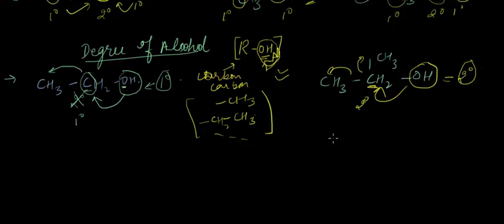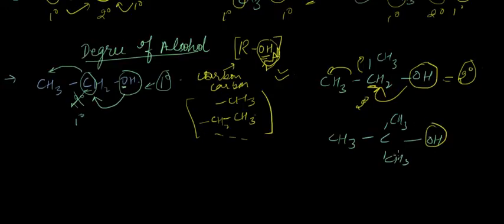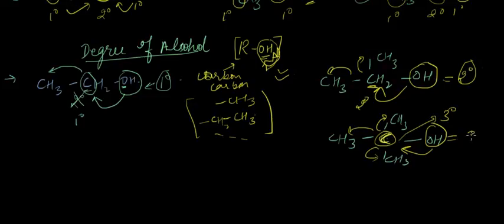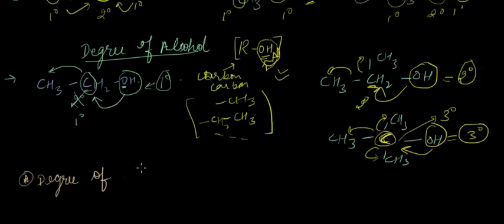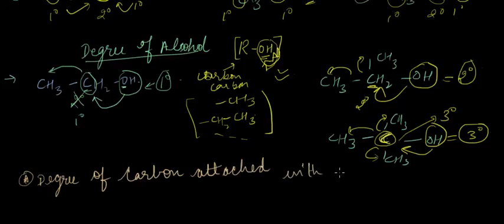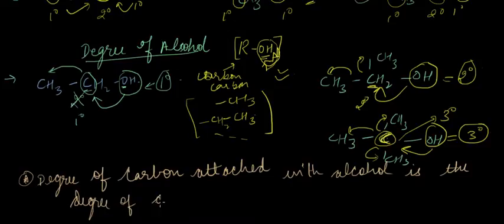In the third example, the degree of this carbon atom directly attached to OH depends on how many adjacent carbon atoms are attached to it. The degree of this carbon atom is three, hence the degree of this alcohol is also three — a third degree alcohol. To summarize: the degree of carbon attached to OH is the degree of the alcohol.